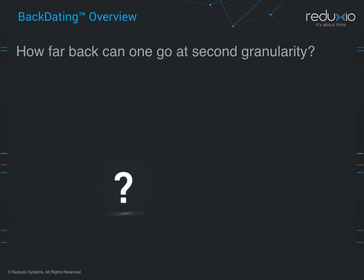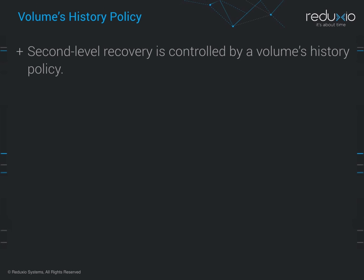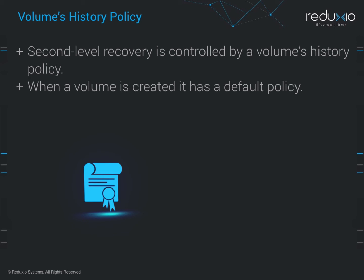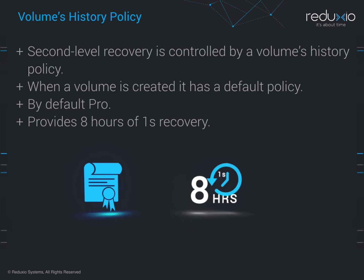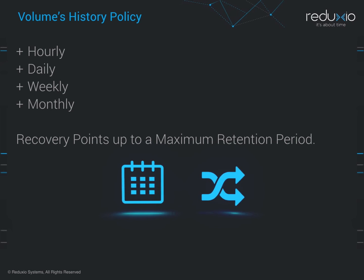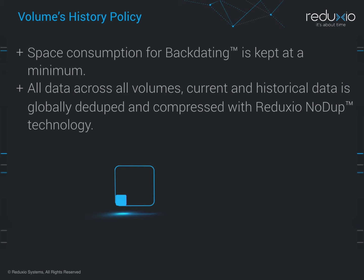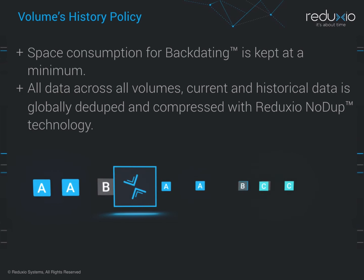So how far back can one go at second granularity? Theoretically, there is no limit. However, practically, how much second-level recovery is available is controlled by a volume's history policy. When a volume is created, it has a default policy — which is, by default, PRO. The default policy provides eight hours of one-second recovery. After that, history is thinned out based on hourly, daily, weekly, and monthly recovery points, up to a maximum retention period. Any policy can be modified on the fly, and changes take immediate effect for all the volumes that have the policy. The space consumption for backdating is kept at a minimum since all data across all volumes — current and historical — is globally deduped and compressed with Reduxio no-dupe technology.